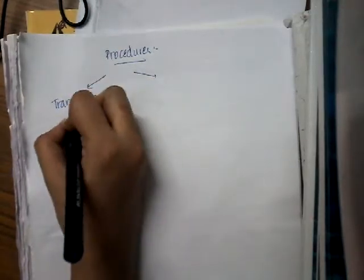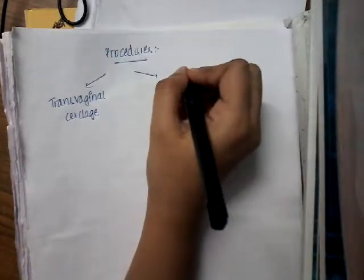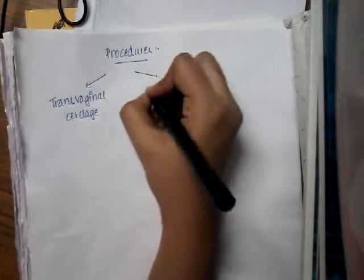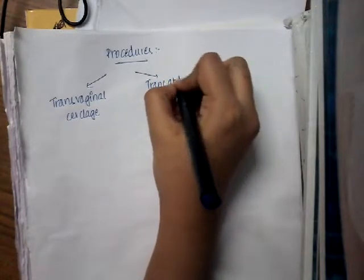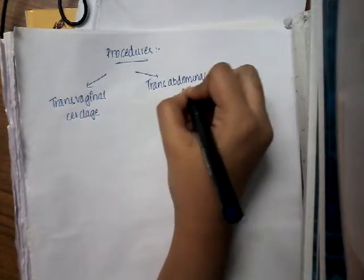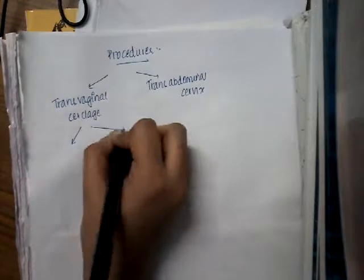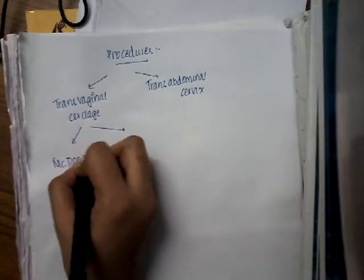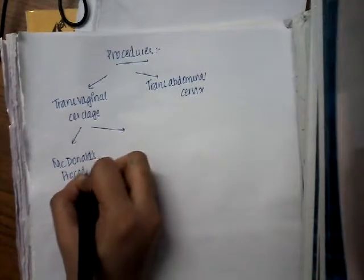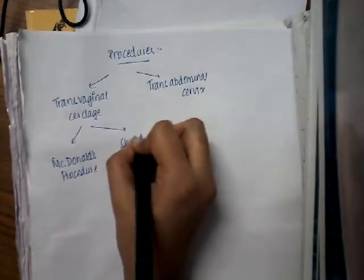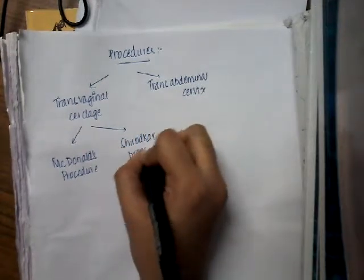Let us learn about the procedures of cerclage. There are mainly two types of procedures. The first type is transvaginal cerclage, where you do the cerclage procedure transvaginally. The second type is transabdominal cerclage, where you do it through an incision. Transvaginal cerclage is again of two types: McDonald's procedure and Shirodkar's procedure.